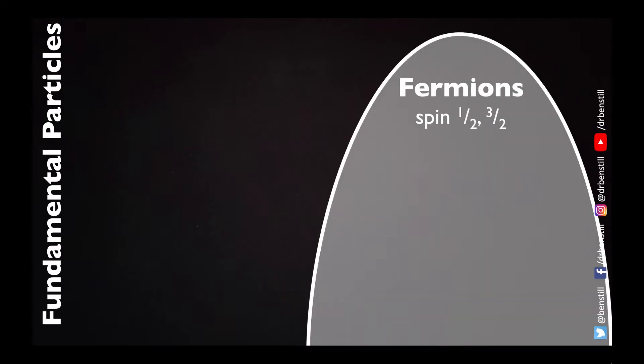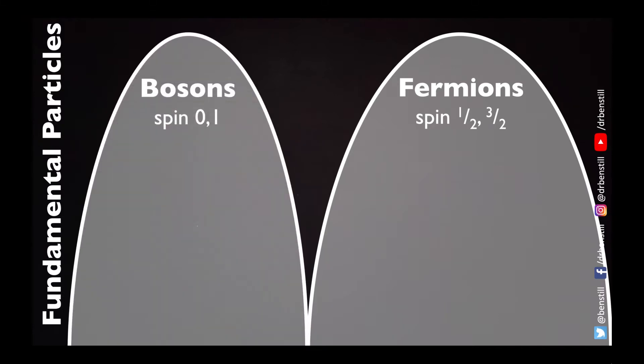We're going to start by talking about the fundamental particles of nature. There are two different families under which the fundamental particles of nature fall: fermions with half-integer spin — spin one half or spin three over two — or bosons which have a quantum spin of zero or one, i.e. integer spin.